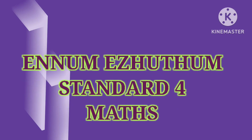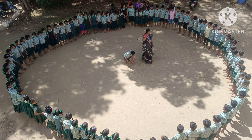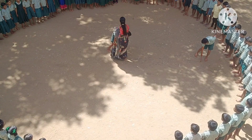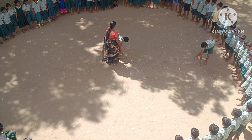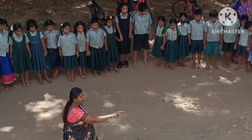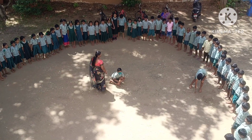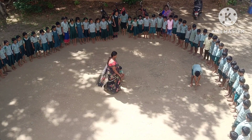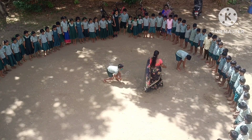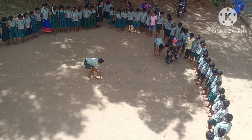Welcome to Standard 4 Maths Geometry on circles. Shall we start the lesson? Yes ma'am. Children, what is a circle? A circle is a shape. Yes, a circle is a shape that's made up of a curved line. Let me show how to draw a circle and the properties of the circle, ok?